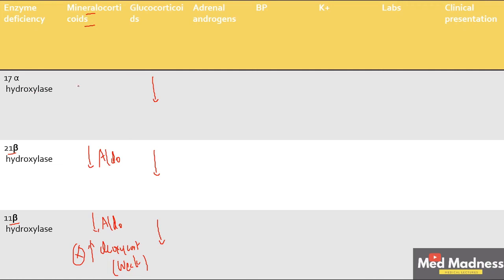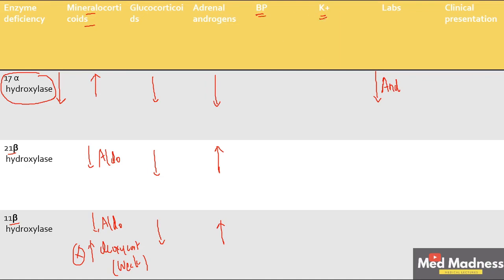In 17-alpha-hydroxylase deficiency, mineralocorticoids are increased. Adrenal androgens are decreased because both cortisol and adrenal androgens depend on 17-alpha-hydroxylase. In 21-beta and 11-beta hydroxylase deficiency, adrenal androgens are increased in both cases. In the lab, androstenedione is decreased in 17-alpha-hydroxylase deficiency.